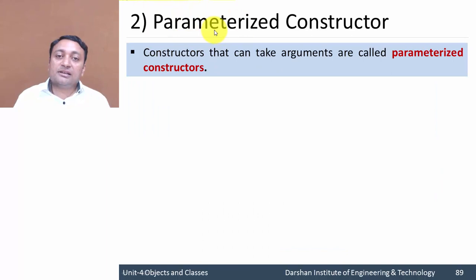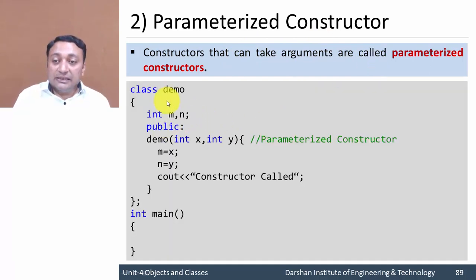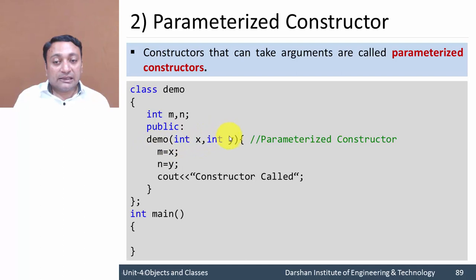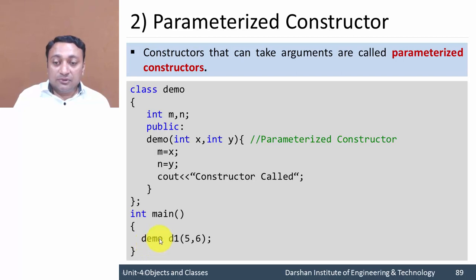Next is the parameterized constructor. Constructors that can take arguments are called parameterized constructors. Here is the class demo and for demo we have created a constructor that is passing some arguments x and y, assigning value x to data member m and y to data member n, along with some message. This is the parameterized constructor. Now the question is how to call this constructor.